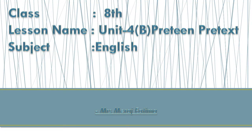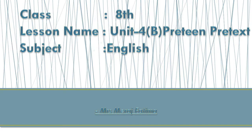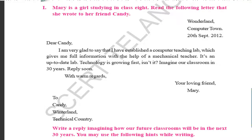Now we'll start our fourth unit. Part B is the poem. First, we'll see the letter. Mary is a girl studying in class 8. Read the following letter that she wrote to her friend Candy. This is an old format — Wonderland Computer Town, 20th September. The address should come on the left side. Okay, all of you, are you listening?